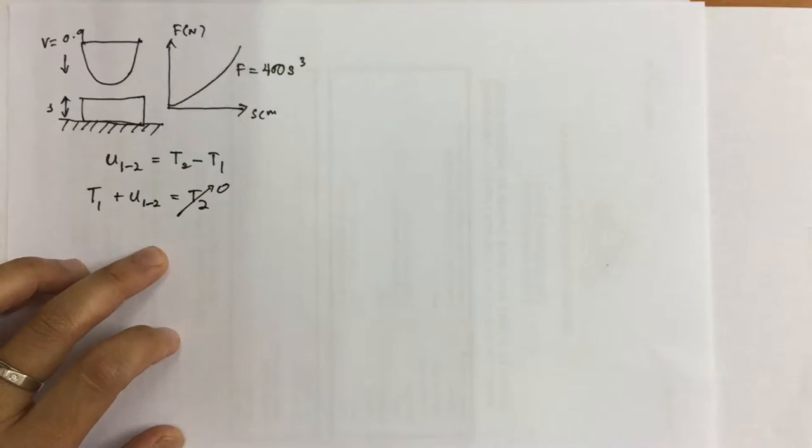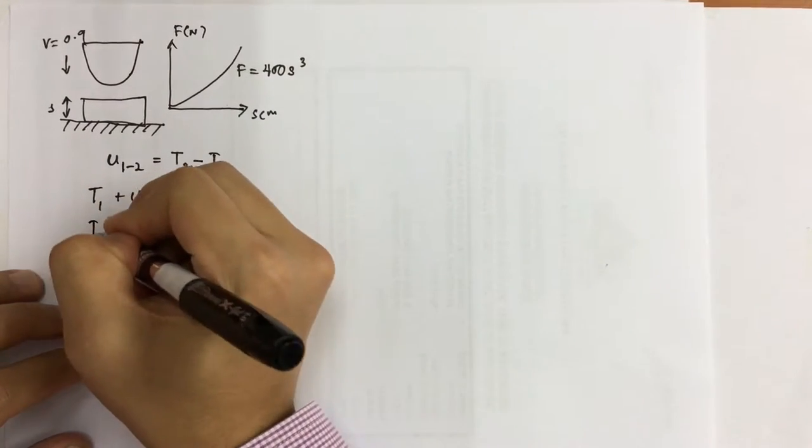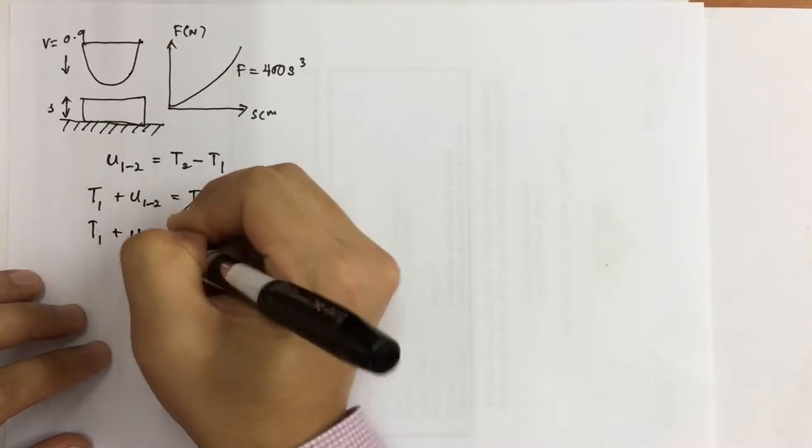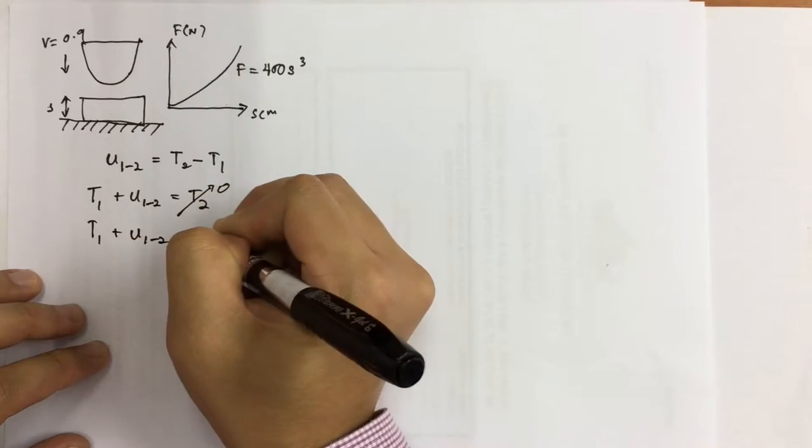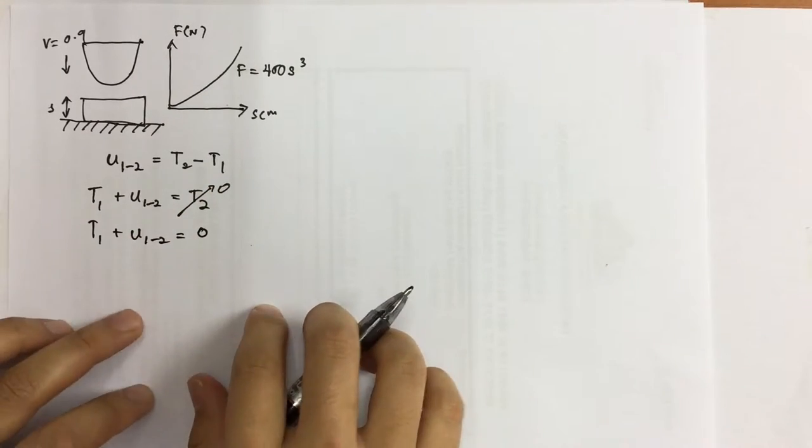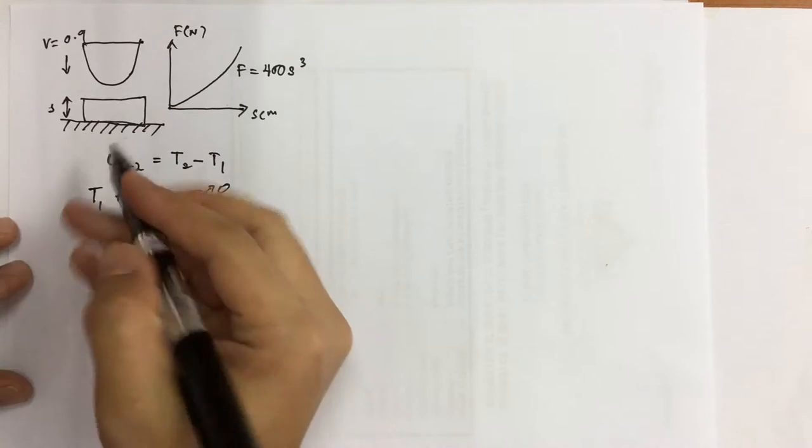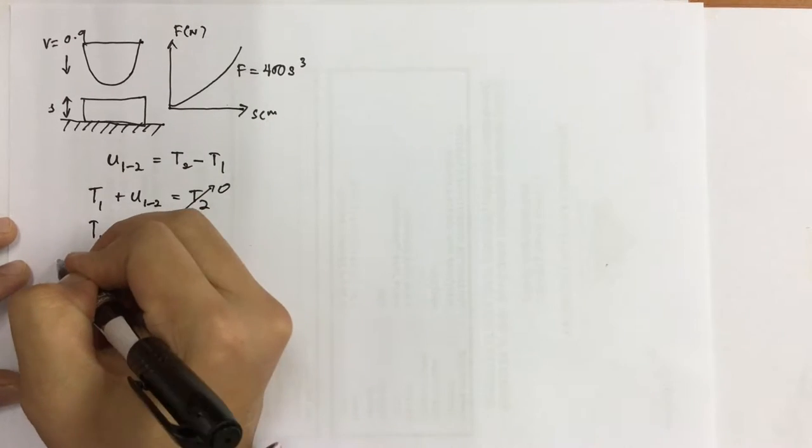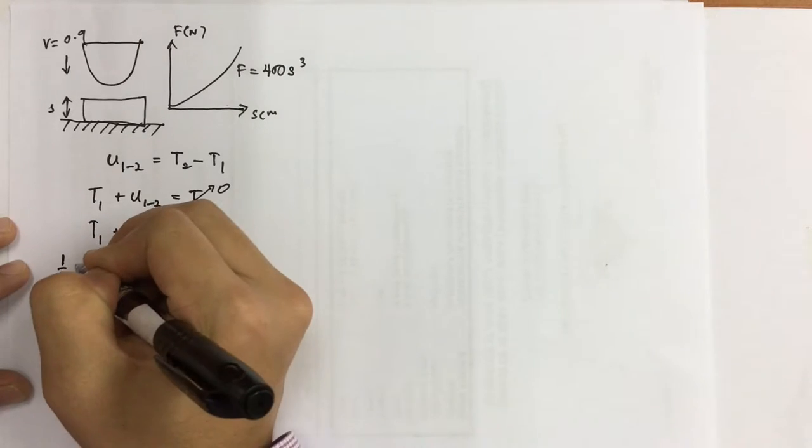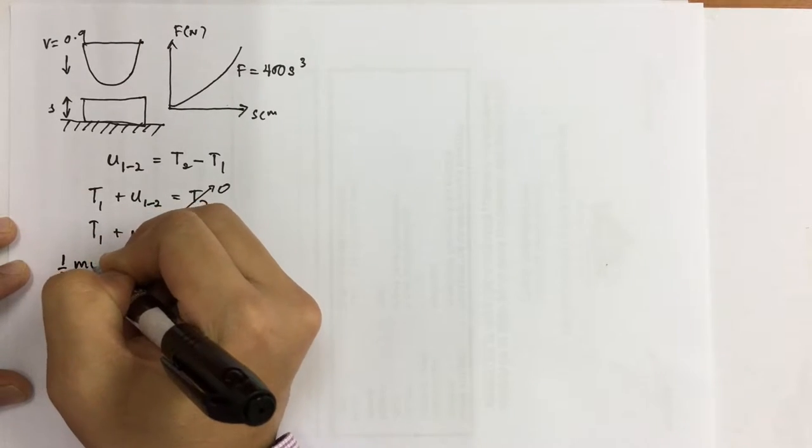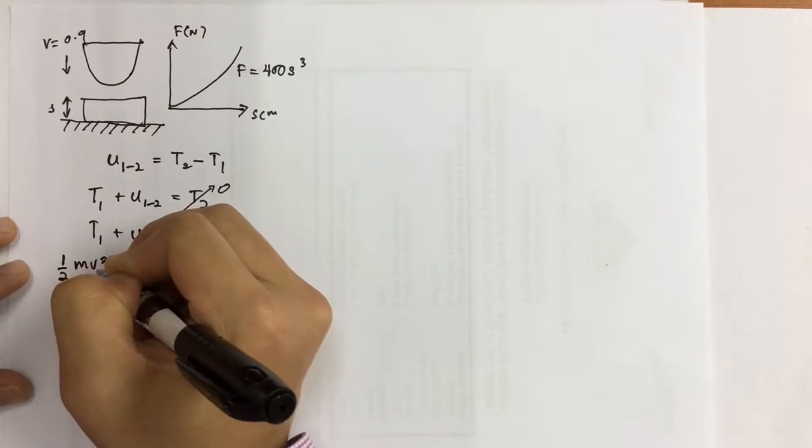So you are going to be left with T1 plus U1 to 2 equals to zero. The T1 is basically the initial kinetic energy. The initial kinetic energy is basically one-half M V squared, the first one.